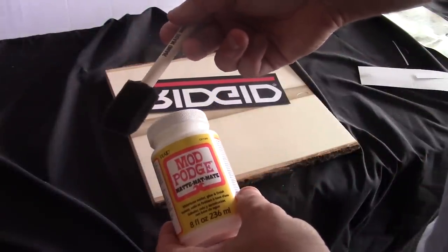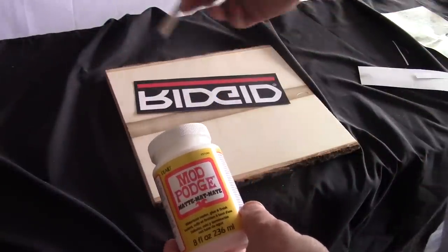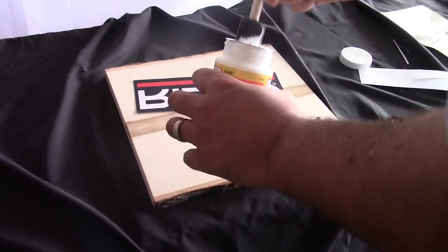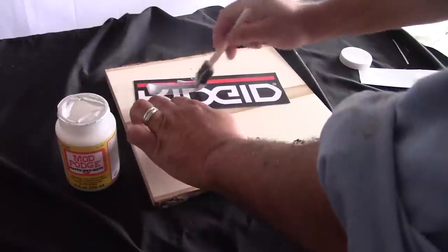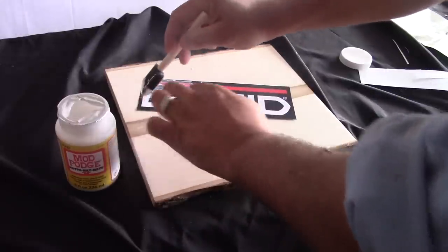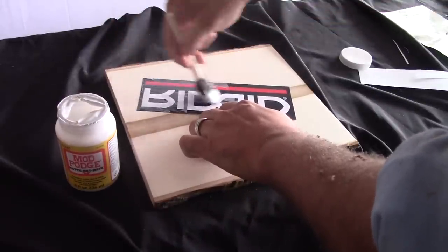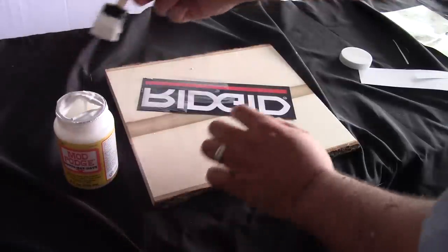And you're going to get a foam brush and you're just going to put that on the actual picture itself. So now it's time to apply the Mod Podge, once again I'm just using a foam brush, but you want to make sure that you put a lot of this on there. You want to make sure that you cover the entire picture because if not...